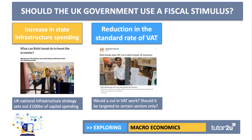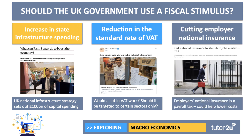Another possibility is that the government could decide to cut the standard rate of value-added tax, which is currently at 20% — for example, cutting VAT to 15%. The big question is: would a cut in VAT actually work? Would it apply to the whole economy, or would they target it to certain industries only? The third option, which is being mooted by many economists, is to bring down the rate of employer national insurance contributions. Employers' national insurance is a payroll tax — cutting that could help reduce the cost of employing people and perhaps mitigate fears of a big rise in unemployment in 2020 and 2021.